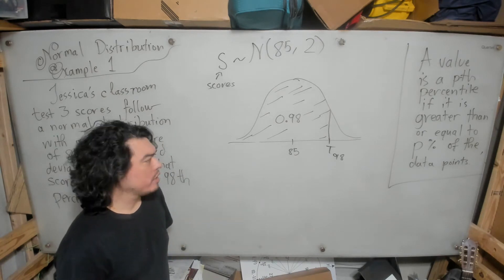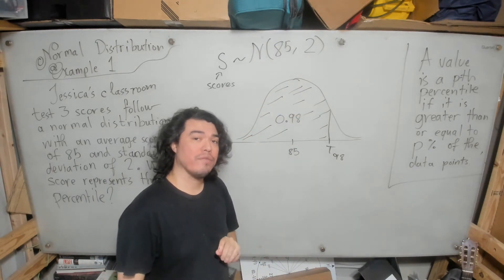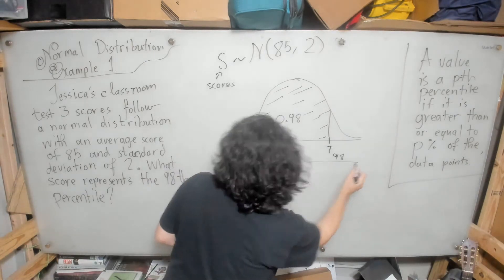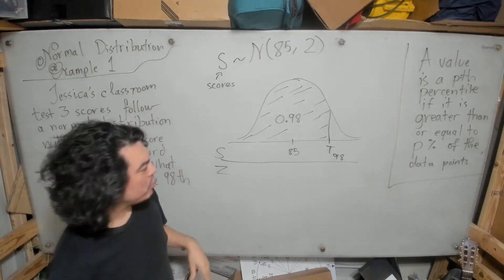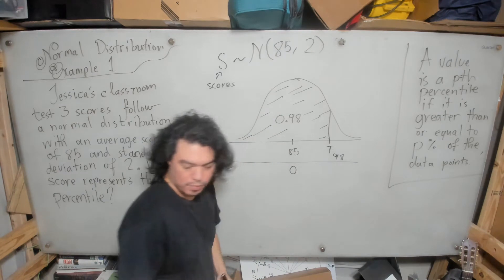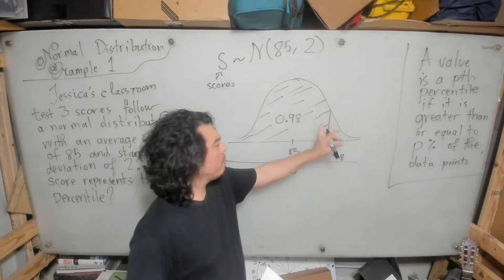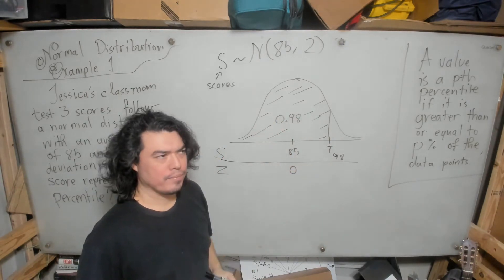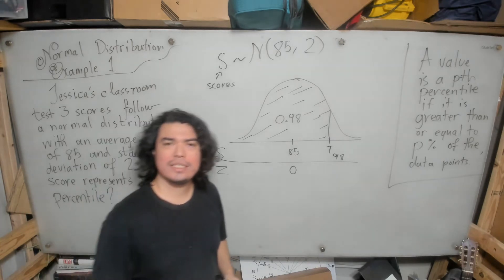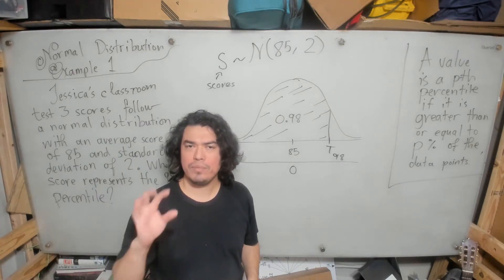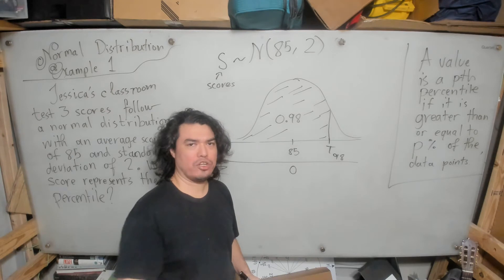We don't know what that value is directly in terms of this distribution, but we do know how to work with it using the standard normal. These are the values for our distribution of test scores, and underneath I'll put the corresponding values for the standard normal, where the mean is 0. We're going to look for what value of z gives us a cumulative area of 0.98 — that is, an area of 0.98 to the left of z. This is exactly the kind of question we addressed previously when dealing with the standard normal.